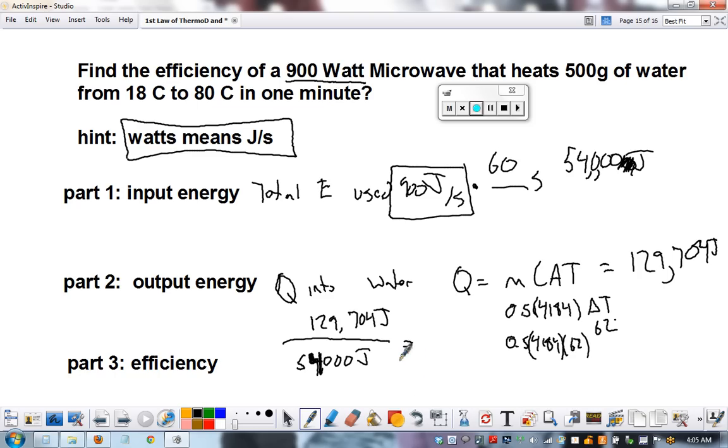The efficiency would be that number times 100. I made these numbers up in my head not realizing that I made an impossible machine with above 100% efficiency.